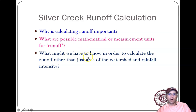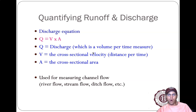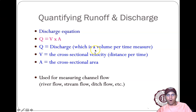What measurements might we use to calculate runoff, other than knowing how big the watershed is and how much it rains? Runoff is measured with the letter Q because runoff is a type of discharge. Water — and even other fluids like oil — can be measured in terms of discharge, which is a volume per unit time.